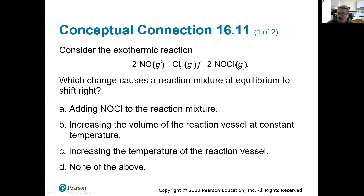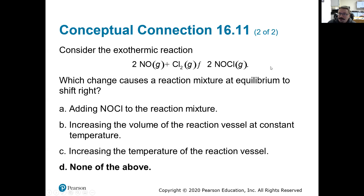For our last question, consider this exothermic reaction with a negative delta H — heat is going to be a product. What change is going to cause the reaction mixture to shift right towards the product side? The options are: adding product to the reaction mixture; increasing the volume and therefore decreasing the pressure (we have three molecules of gas on the reactant side and two on the product side); increasing the temperature; or none of the above. The answer is none of the above. If this is exothermic, increasing the temperature adds a product — that won't shift it to the right. Increasing the volume decreases the pressure, but pressure is a reactant here, so removing it won't shift it right either. And adding a product would shift it to the left, not the right.